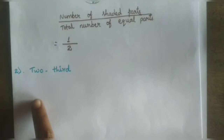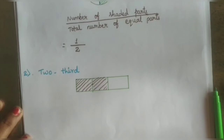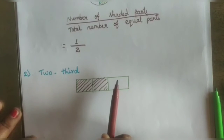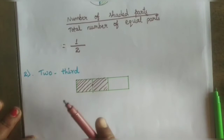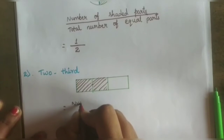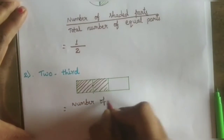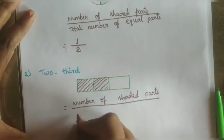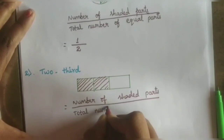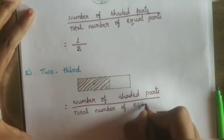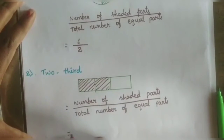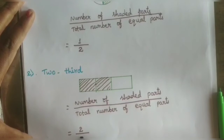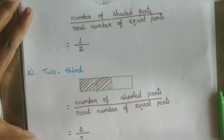Second one: two thirds. In this picture there are three equal parts and two parts are shaded. Number of shaded parts is two, and the total number of equal parts is three, so it is two by three — two thirds.